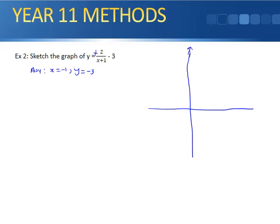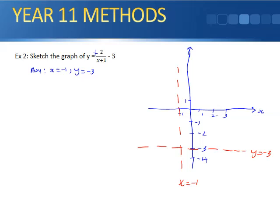Setting up the coordinate axes with values and placing the asymptotes: x = -1 and y = -3 become the new reference axes. Being a positive graph, the curve goes through the relevant quadrants. The graph will cross the axes somewhere, so we need to find the x and y intercepts.